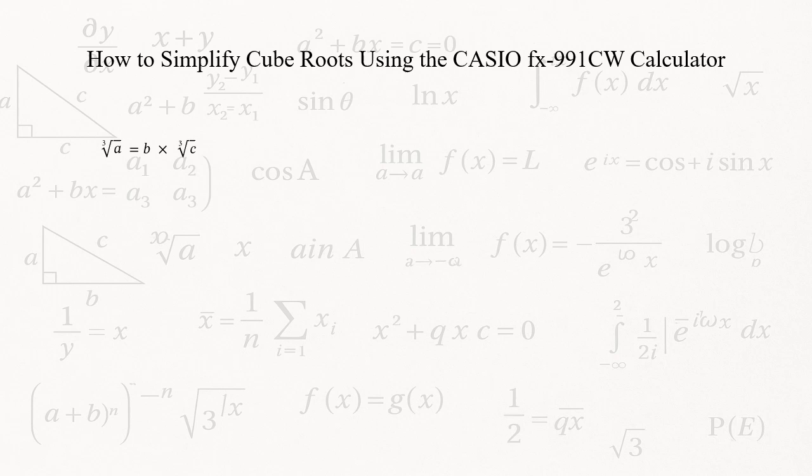For example, the cube root of 24 equals the cube root of 2 cubed times 3. This simplifies to 2 times the cube root of 3. Here, B is 2 and C is 3.